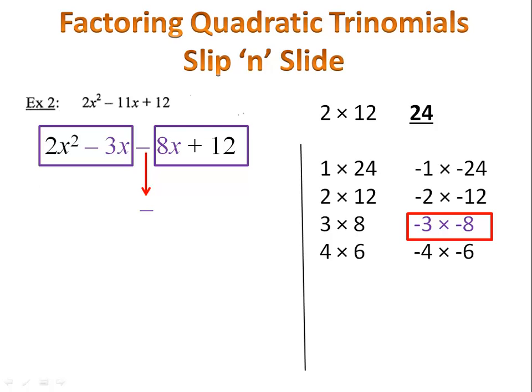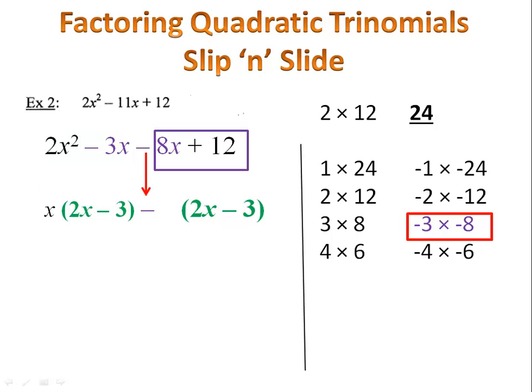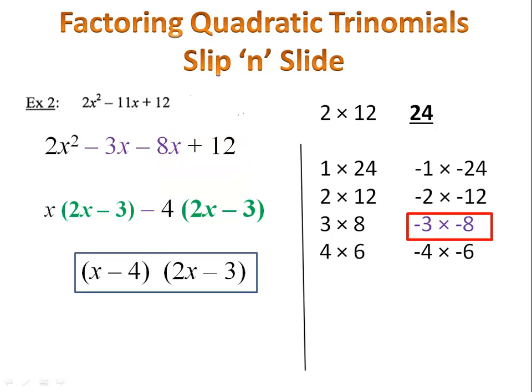We look at the 2x squared minus 3x. We factor it using the greatest common factor. 2x minus 3 and x are the factors of that binomial. Now we take that 2x minus 3 and we put it on the other side. Finally, we look at the binomial on the right hand side, the 8x plus 12, pull out the greatest common factor and now we're basically done. Our two factors are x minus 4 and 2x minus 3.